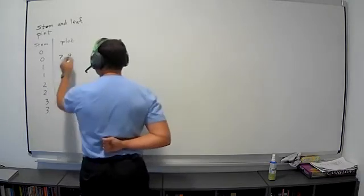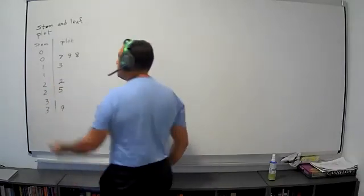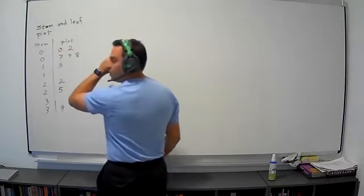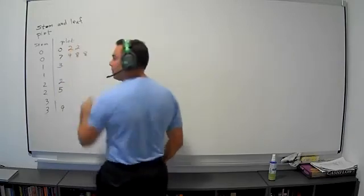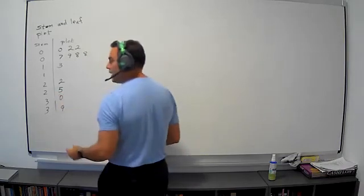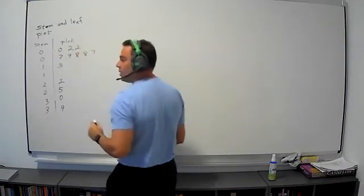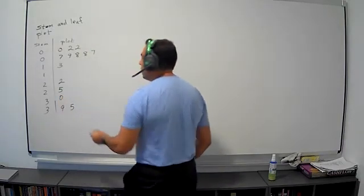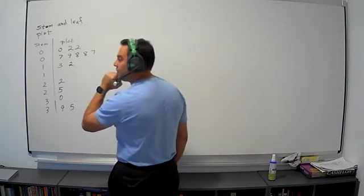We have eight, we have 22, we have zero, we have two, we have 18, we have 18, we have two, we have 30, we have seven, right here, we have 35, right here, we have 12.